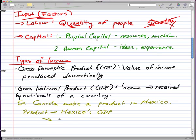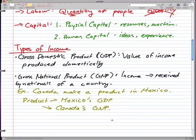But it is Canada's GNP. So that gives us a little distinction between what Gross Domestic Product and Gross National Product is.